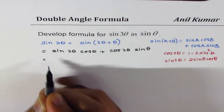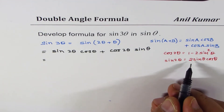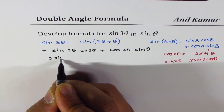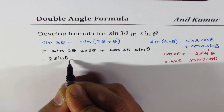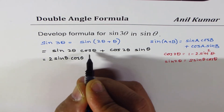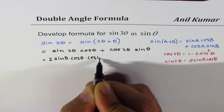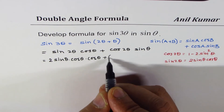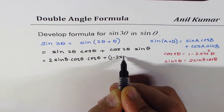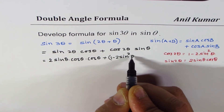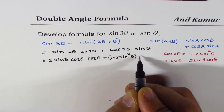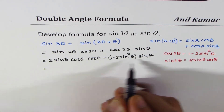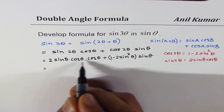We get sin 2 theta as 2 times sin theta cos theta. We already have another cos theta here, plus instead of cos 2 theta, I will write 1 minus 2 sin squared theta multiplied by sin theta. Let us open the brackets and combine these two terms.